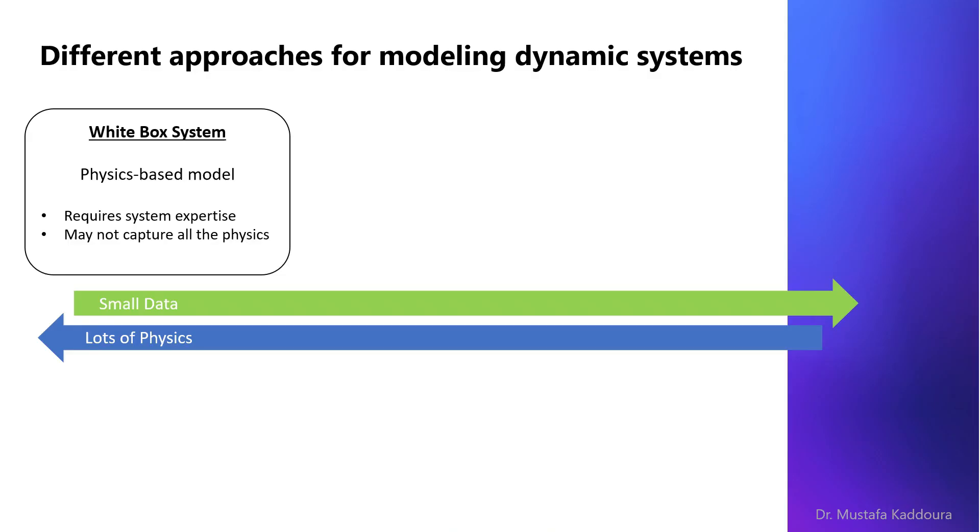There are different approaches for modeling dynamic systems. First approach is the white box modeling which is based on physics equations. However this requires system expertise and may include several assumptions preventing it from capturing all the physics.